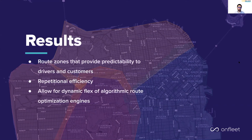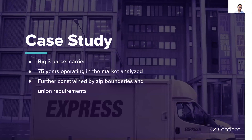And now we're finished: route zones that are going to provide predictability to drivers and customers, repetitional efficiency, and take the most advantage of dynamic algorithmic route optimization engines. I'm going to conclude with some numbers from an actual geospatial analysis and zone creation that OnFleet did with a big three parcel carrier — someone who has been doing deliveries in the market for 75 years and spent a tremendous amount of time and money in route engineering. We created route zones using demand point analysis, the location and allocation, layered on complex operational constraints, added zip boundaries, factored in union requirements, and yet these still demonstrated pretty impressive results.